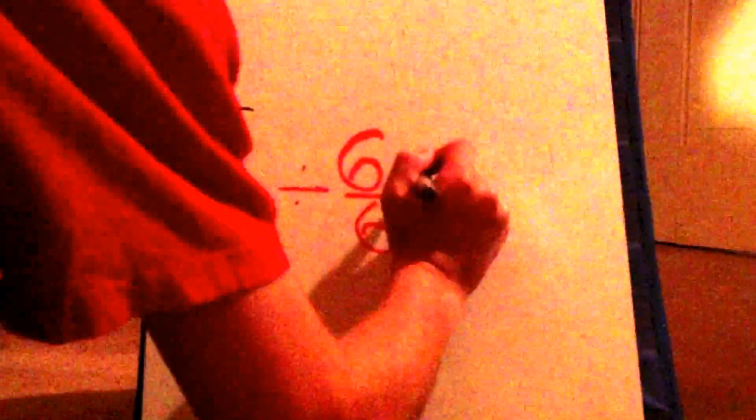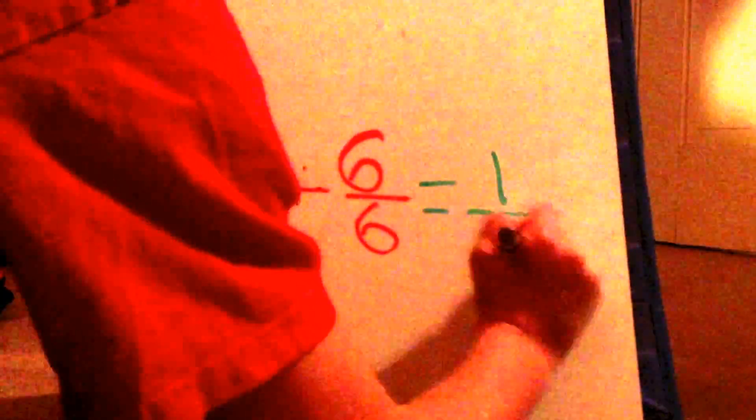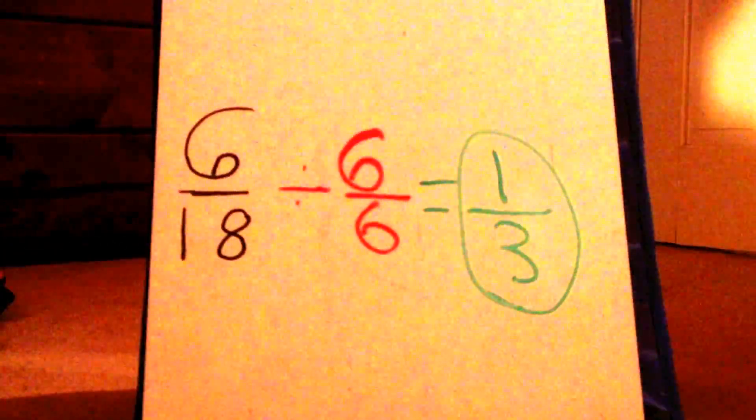To find the lowest form of ratio, divide the numerator and denominator by the greatest common factor of the two numbers, which in this case is 6, and that will give you the lowest form.